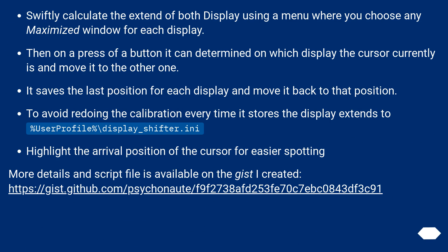The script swiftly calculates the extent of both displays using a menu where you choose any maximized window for each display. Then on a press of a button it can determine on which display the cursor currently is and move it to the other one. It saves the last position for each display and moves back to that position. To avoid redoing the calibration every time, it stores the display extents to %userprofile%\display_shifter.ini and highlights the arrival position of the cursor for easier spotting. More details and the script file are available on a GitHub Gist at the linked URL.